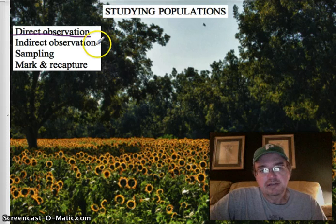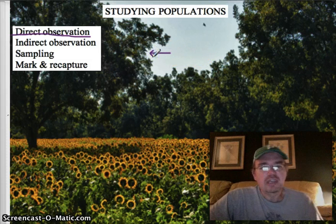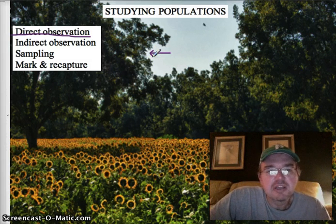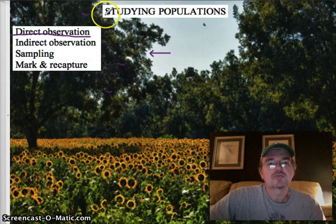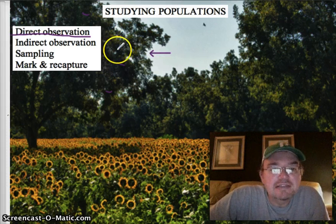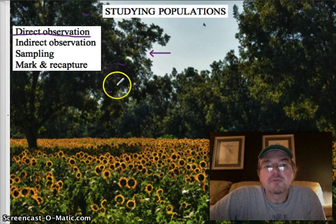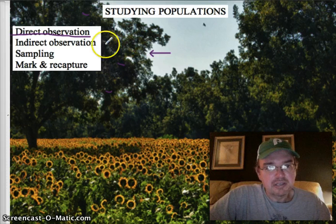Indirect observation. Let's take this for an example. Let's say you were counting the number of birds in this tree. One way to indirectly get a good estimate of the number of birds is to count the number of nests. If you could observe, say, 10 nests in this tree, and knowing there would be about 3 or 4 birds per nest, you can simply multiply 3 or 4 times 10 to get a good estimate of the population. That would be an example of indirect observation.